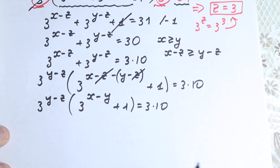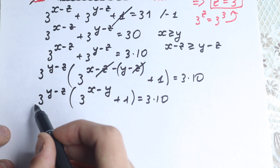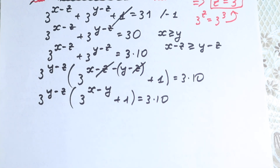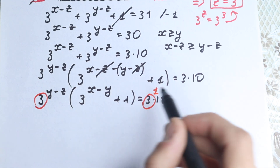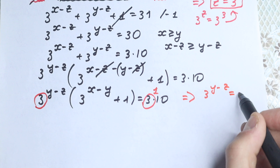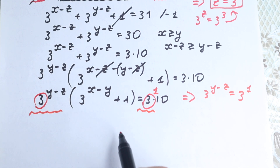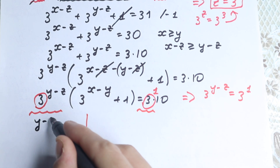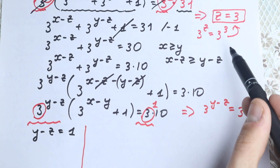Take a look closely. We have 3 to the power y minus z on one side and 3 to the power 1 on the other side, since 3 times 10 gives us a factor of 3 to the first power. Because the bases are the same, we equate the exponents: y minus z equals 1. And since z equals 3, we have y minus 3 equals 1, so y equals 4.